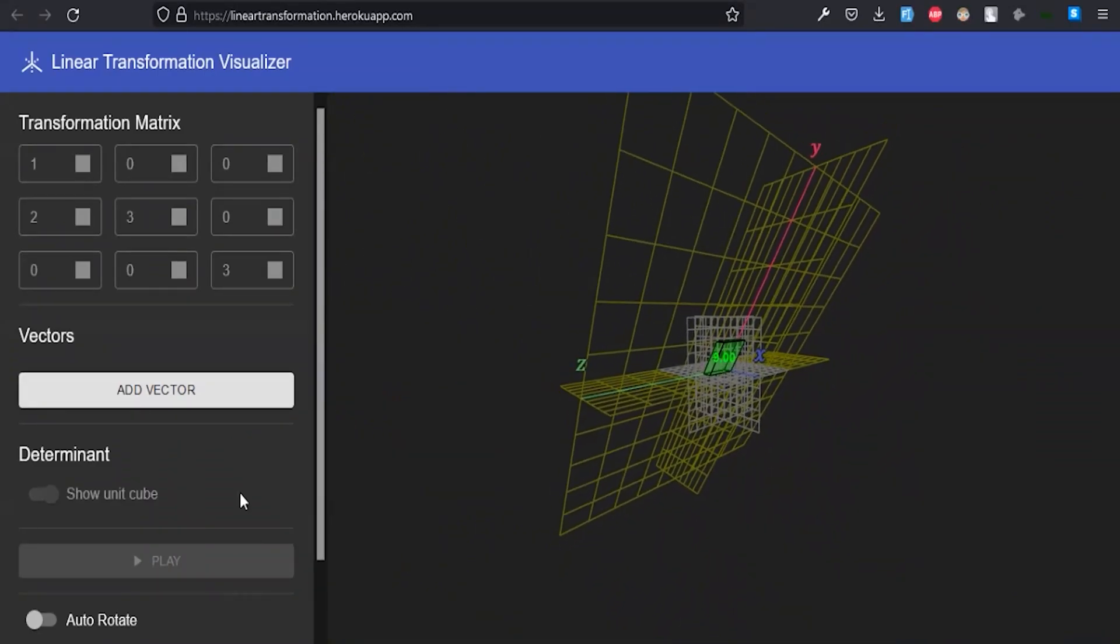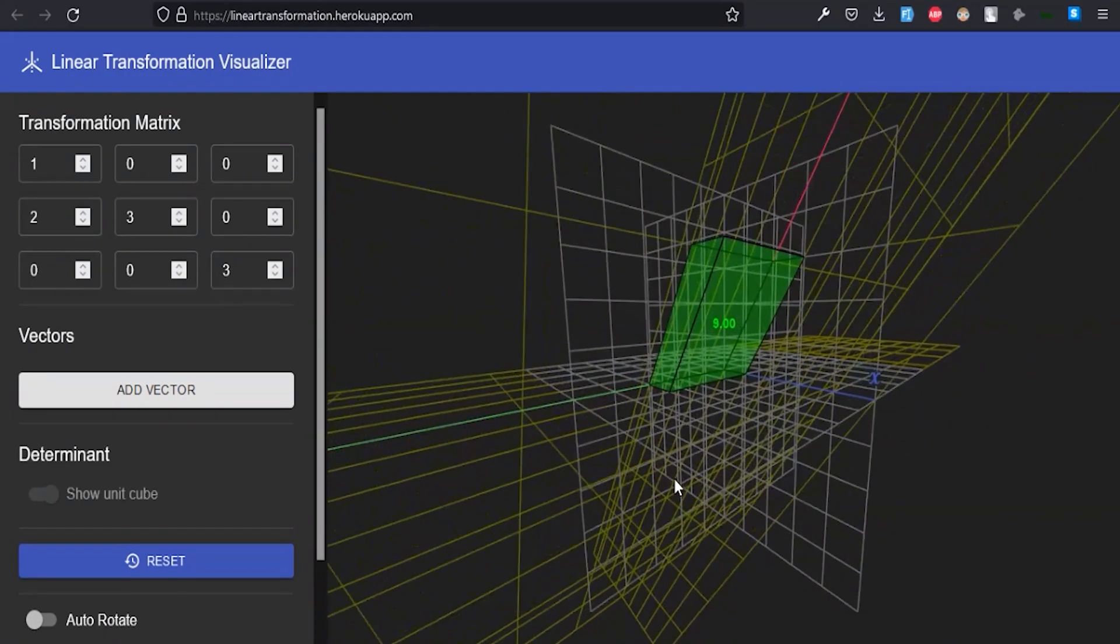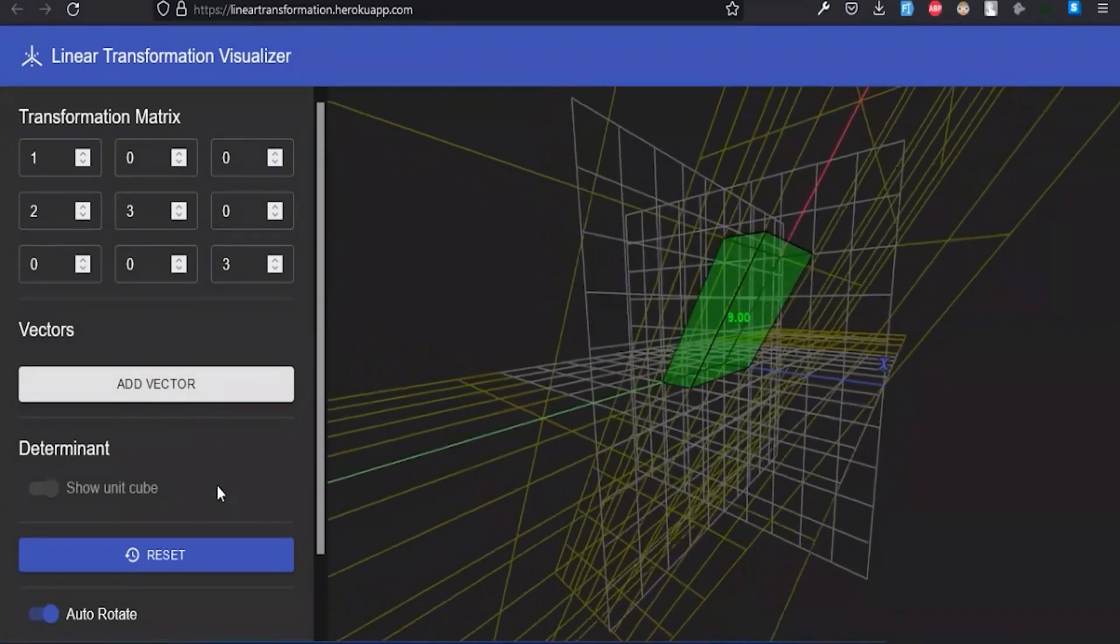Let's add some shear along the y-axis too. Therefore the volume of the parallelopiped scales by 9 units if we apply this transformation matrix to the standard three-dimensional space.